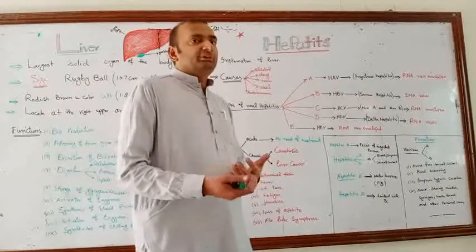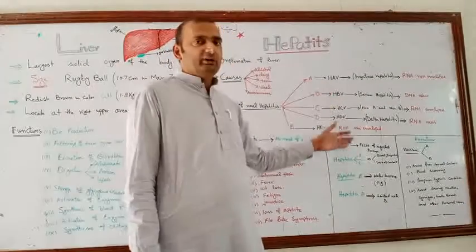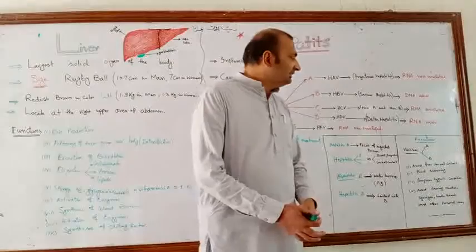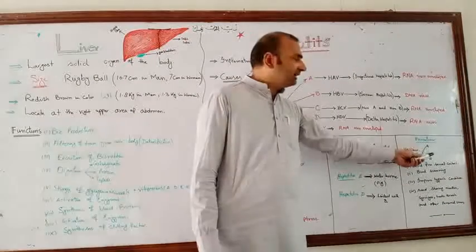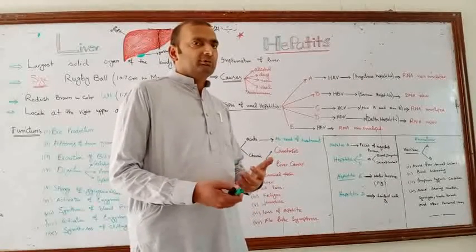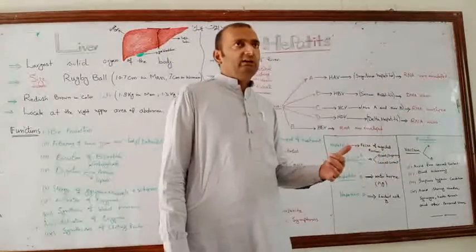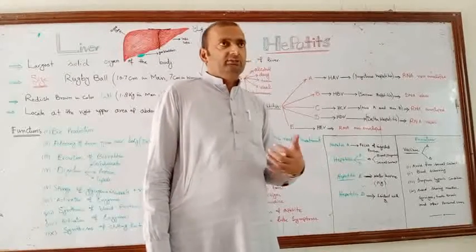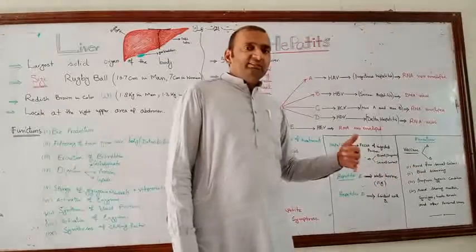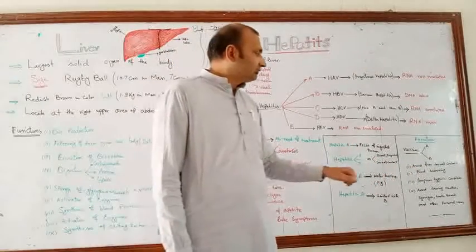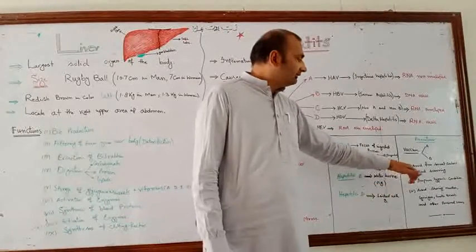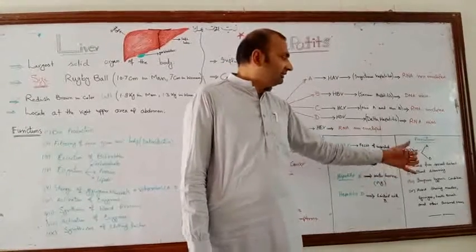We can prevent these viral hepatitis infections. Vaccines are available for hepatitis A and hepatitis B. The hepatitis B vaccine is produced using recombinant DNA technology and is available in the market. Hepatitis C and other viruses have no vaccine, but we can avoid infection by avoiding unprotected sexual contact.